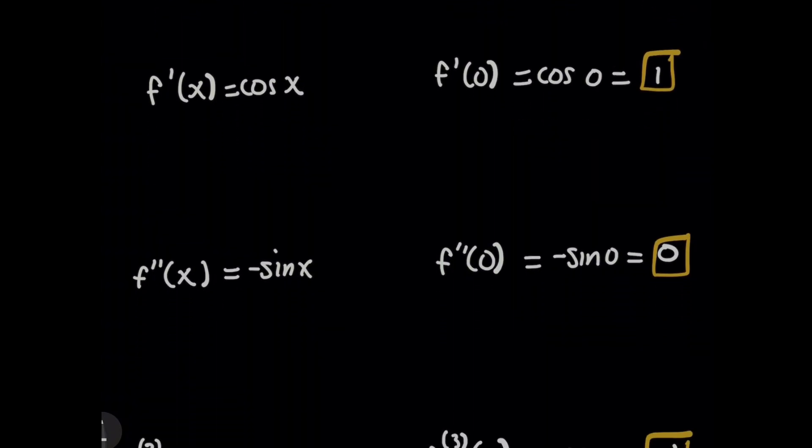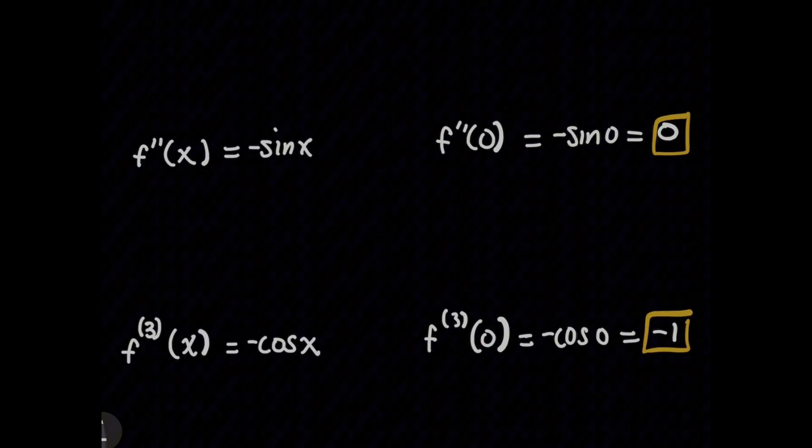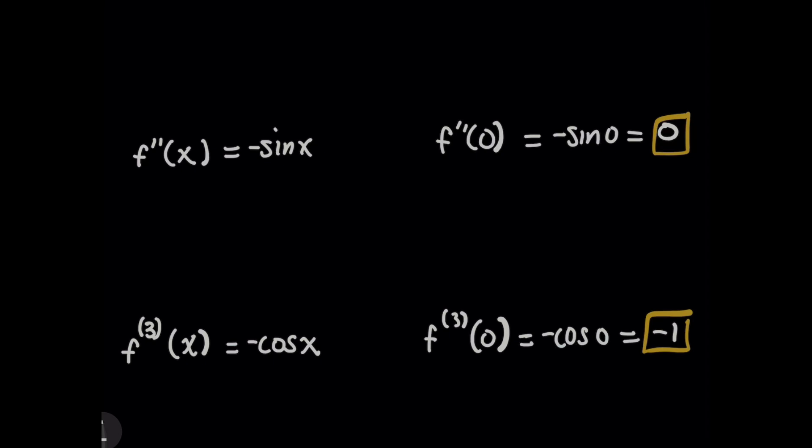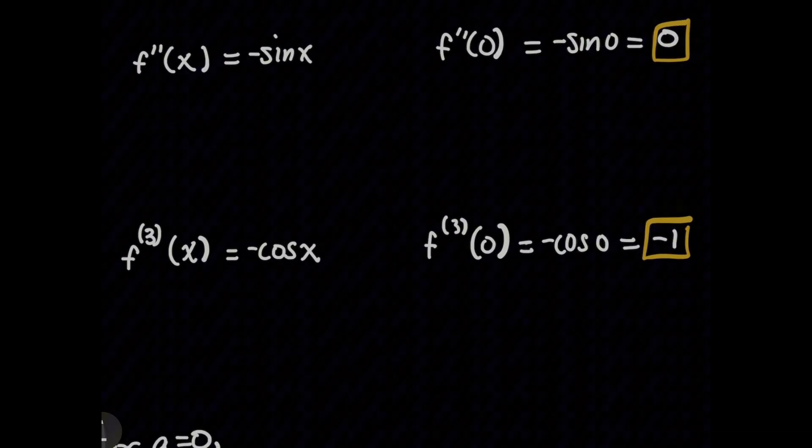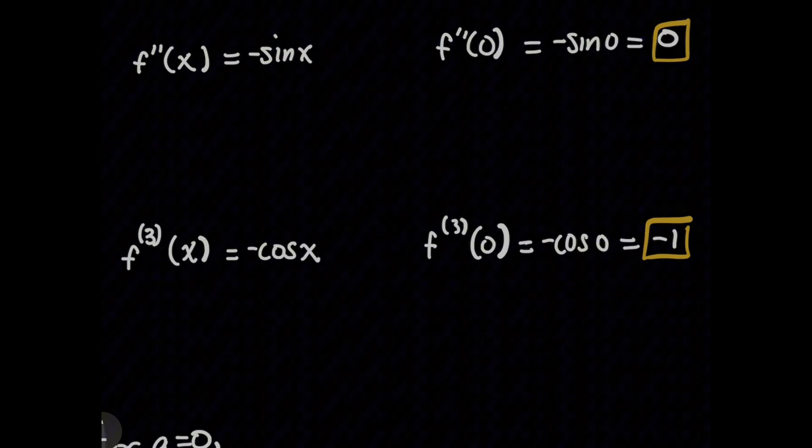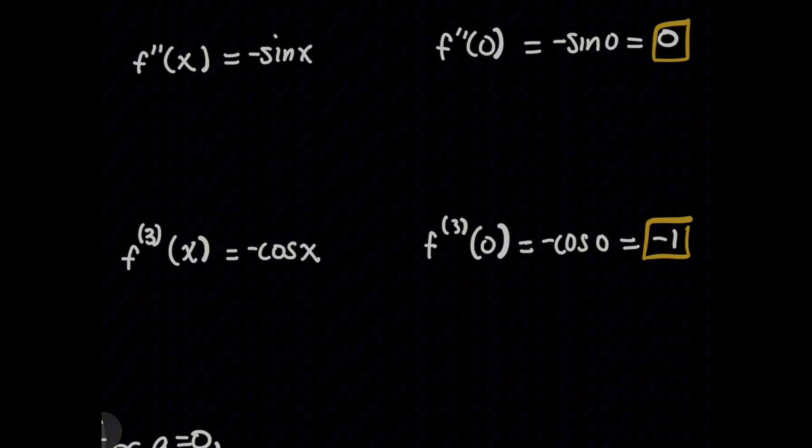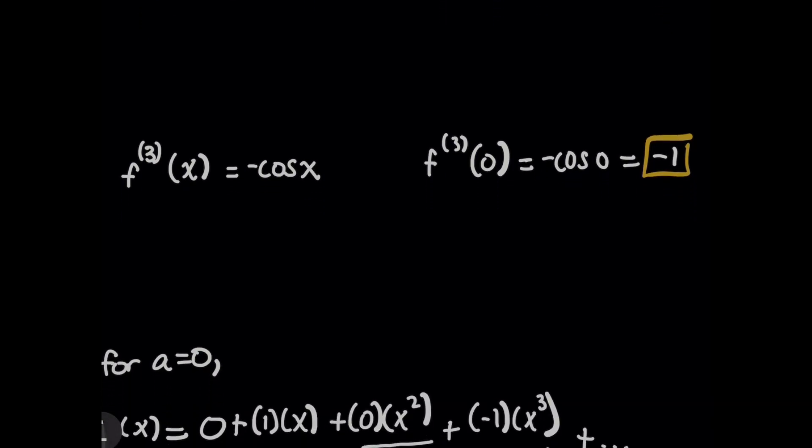And then yet again, we take the derivative. So the second derivative function will be negative sine of x. And plugging in zero simply gives you negative sine of zero, and we know that's zero as well. And then finally, I'll show you how to work out the next term here, which is going to be the third derivative of x. And that gives you a function that's negative cosine of x. And when you plug in zero for that, you get negative one.